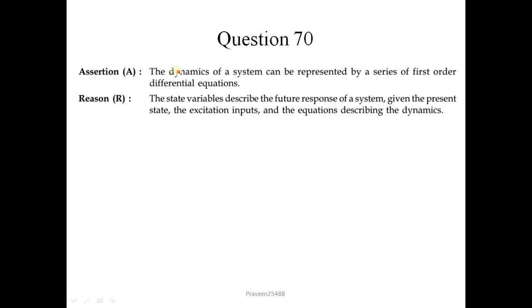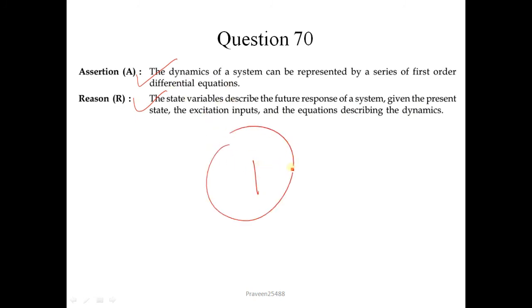Question number 70. The dynamics of a system can be represented by a series of first order differential equations — this is correct. The state variables describe the future response of a system given the present state, the excitation inputs, and the equations describing the dynamics — this is also correct and is an accurate explanation of the given assertion. So option 1 is the correct answer.